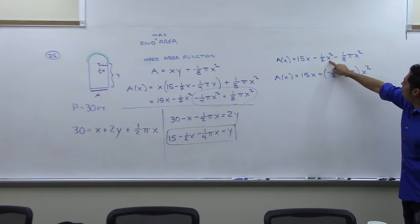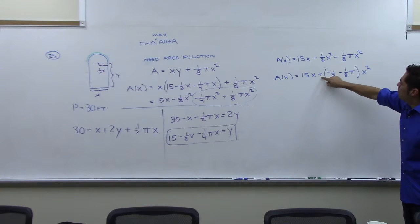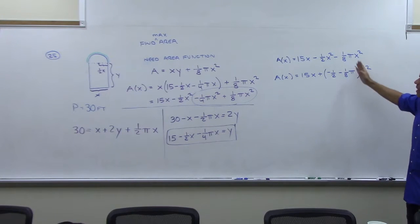So what I'd be left with is negative one-half minus one-eighth pi x squared. When I pull the x squared out of here, I get negative one-half. Pull the x squared out of here, I get negative one-eighth pi. I just put a plus here. Of course, we could distribute those through, it would be negatives, and the x squared would go through.